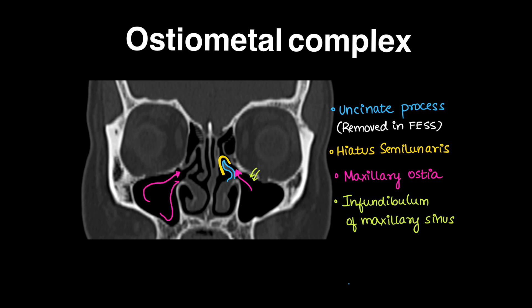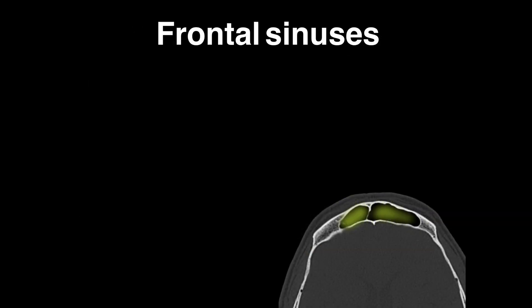Here we can see how the maxillary sinus is drained. The region below the middle turbinate is the middle meatus — that is the ostiomeatal complex. These are the components of the ostiomeatal complex.